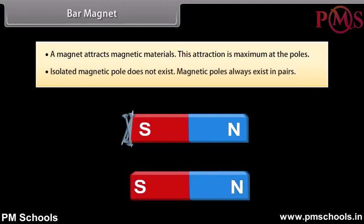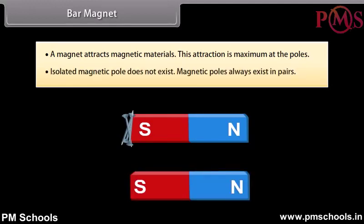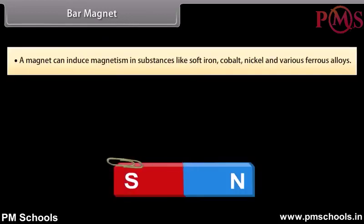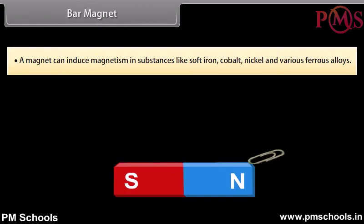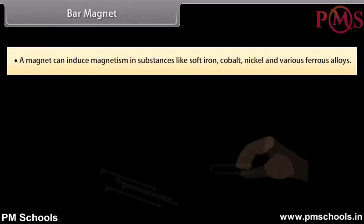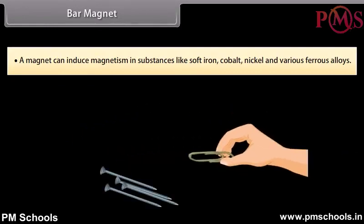An isolated magnetic pole does not exist; magnetic poles always exist in pairs. A magnet can induce magnetism in substances like soft iron, cobalt, nickel, and various ferrous alloys.